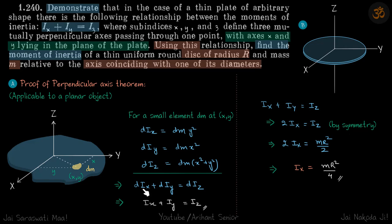If we integrate to include all these masses, we will get Ix plus Iy is equal to Iz. Now let's calculate the moment of inertia of a disc about a diameter.